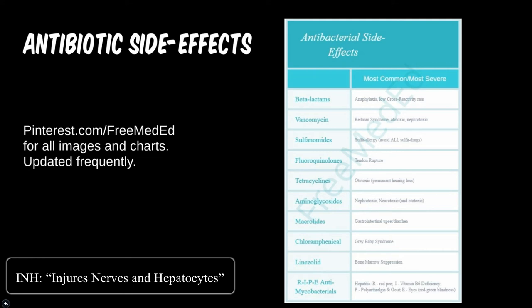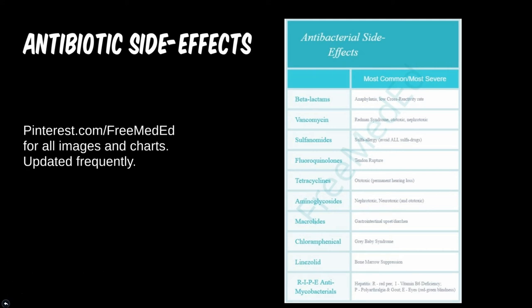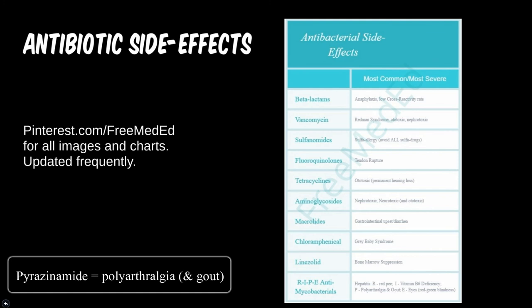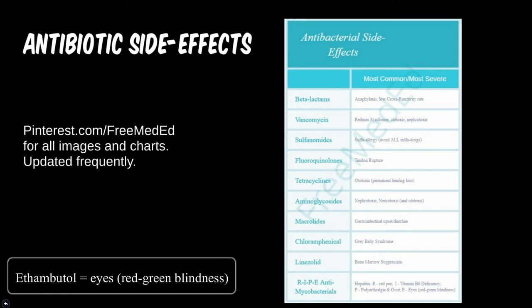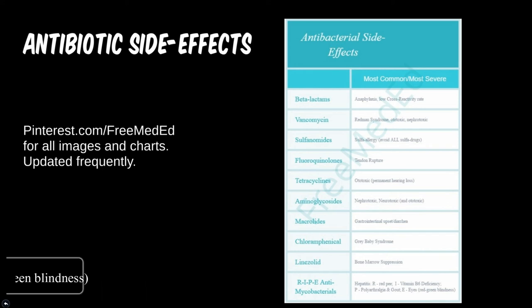Luckily, the peripheral neuropathy from INH can be prevented or treated with B6 supplementation. Pyrazinamide can cause hyperuricemia and arthralgia in several locations — the hyperuricemia can go unnoticed until the patient develops gout. And lastly, ethambutol — it can lead to a strange red-green color blindness in patients. This is usually dose-dependent, so decreasing the dose may still make it feasible if needed.